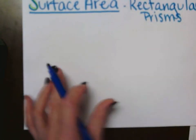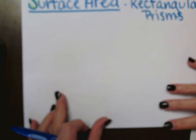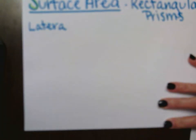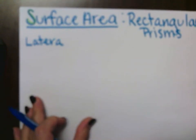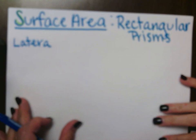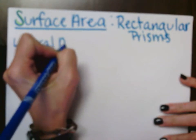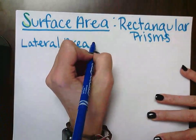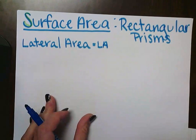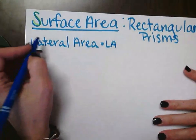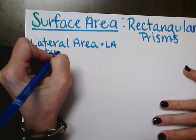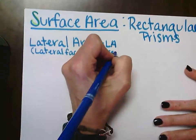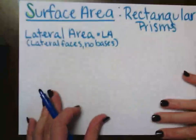First we're going to talk about lateral area, also known as LA. Lateral area means lateral faces, no bases — that kind of rhymes: lateral faces, no bases. So when we think about lateral surface area...